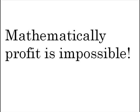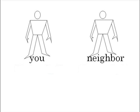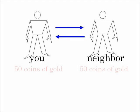Mathematically, profit is impossible. Suppose you live on an island with another person — two people: you and your neighbor. You sell and buy to your neighbor. Let's suppose you and your neighbor each have 50 coins of gold. The total amount of money on the island is 100 coins of gold. This amount is fixed and limited, and we suppose nobody is counterfeiting money.